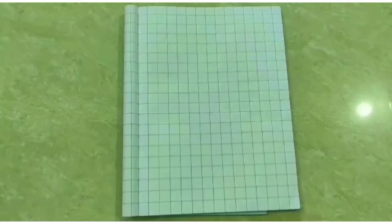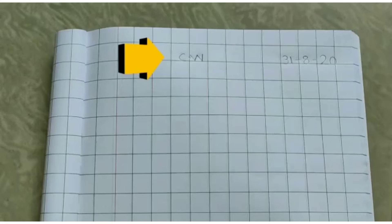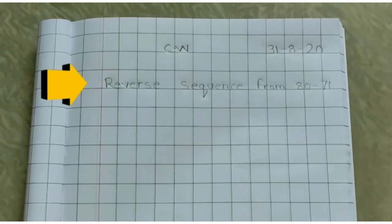So children, this is our maths classwork copy. Now you have to write today's date on the top. After that, write CW classwork and then write the heading: reverse sequence from 80 to 71.